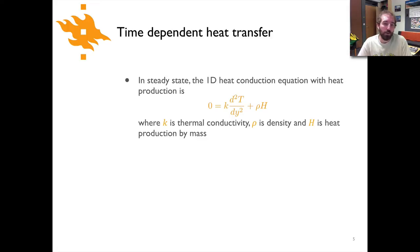When we looked at the one-dimensional heat conduction equation we started with something that looked like this where we had zero on the left side being equal to thermal conductivity times the second derivative of temperature with respect to y plus this heat production term. So k is thermal conductivity, rho is density, h is heat production by mass.